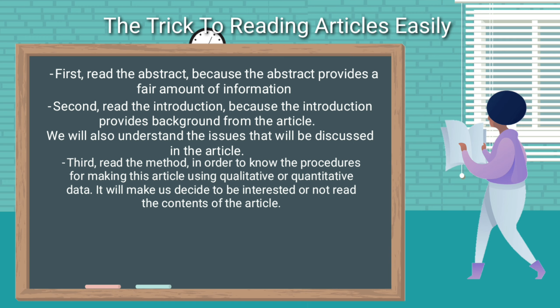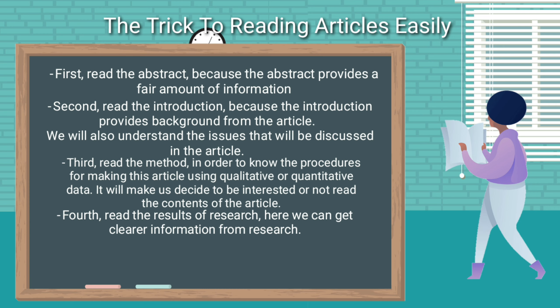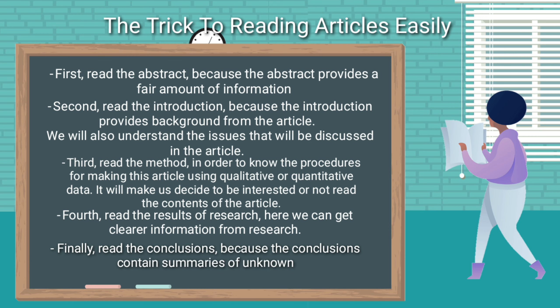Reading the methods section will help us decide whether we are interested in reading the full contents of the article. Fourth, read the results of the research — here we can get clearer information from the research. Finally, read the conclusions, because the conclusions contain summaries of the research questions answered.